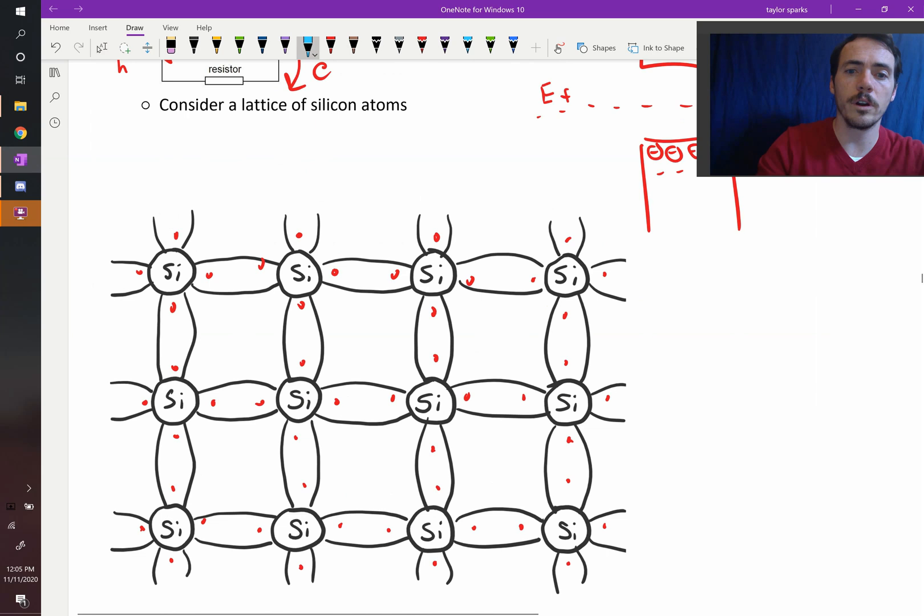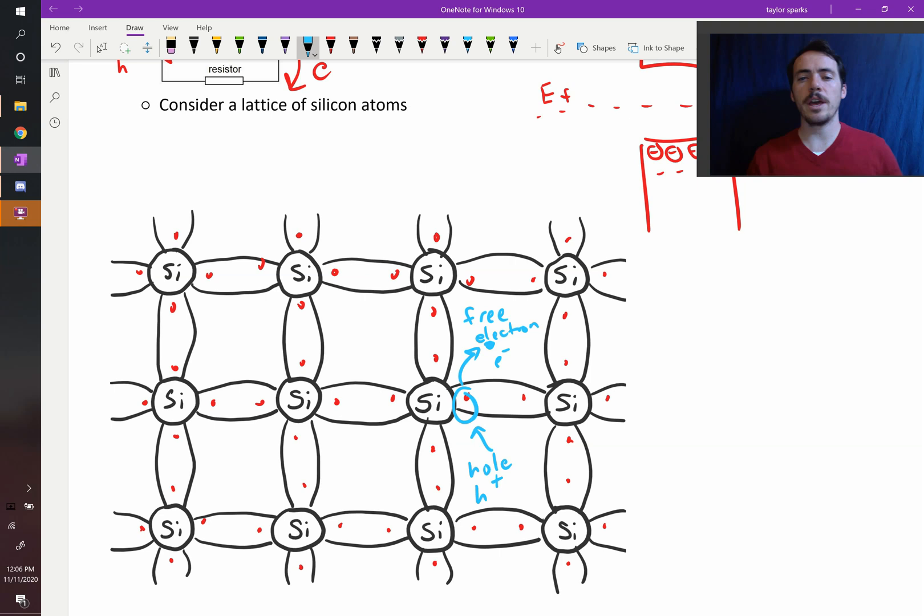So what that looks like is we're literally taking one of these electrons right here and we're pulling it out of that bond. So now this is a free electron, which is negatively charged. And that created a hole. So now we have a hole, which is positively charged, and an electron, which is free.